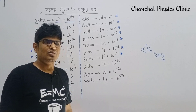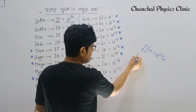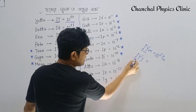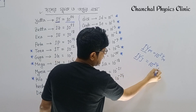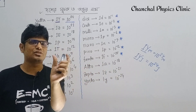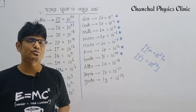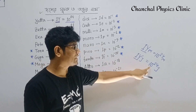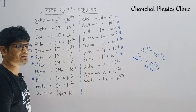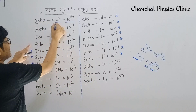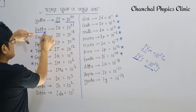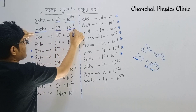1 Yotta equals 10 to the power 24. So 1 Yotta joule equals 10 to the power 24 joules. The next prefix, Zetta, is 10 to the power 22 — or more precisely, 10 to the power 21.